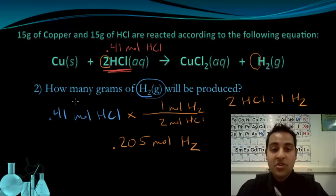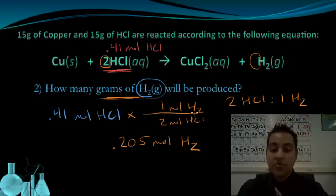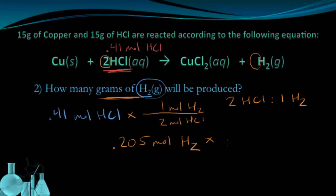Now remember, the question is asking for grams, grams of H2. So I've got to use the formula mass, which is 2 grams per mole for H2, to change this into the number of grams of hydrogen that's produced, which is going to be 0.41 grams of hydrogen gas.